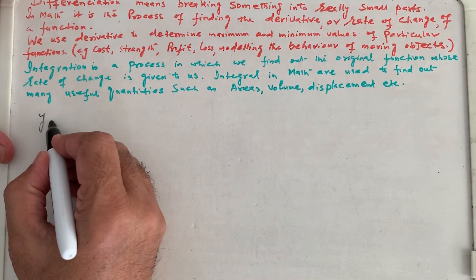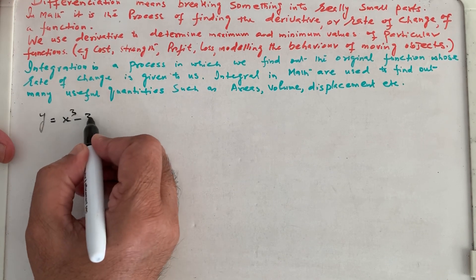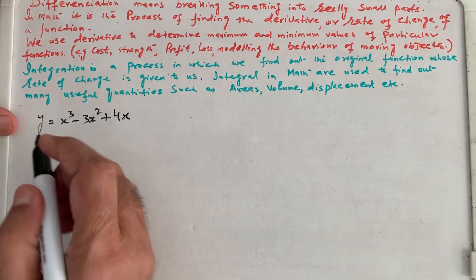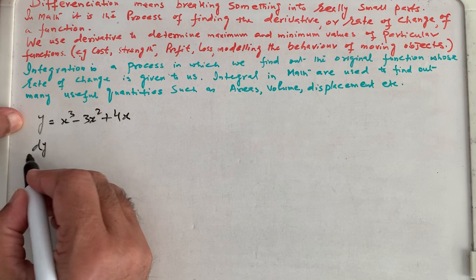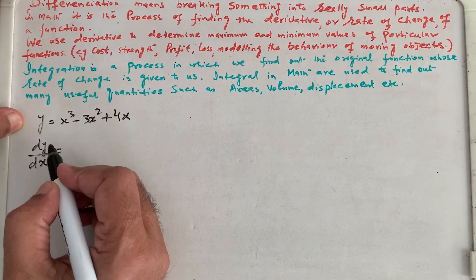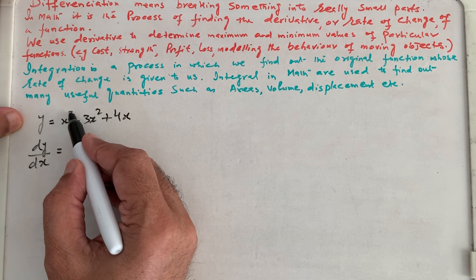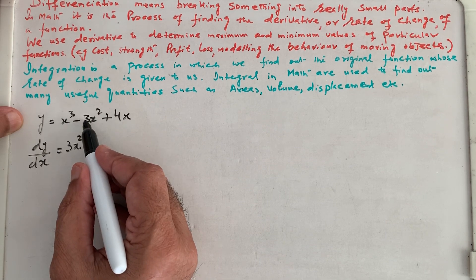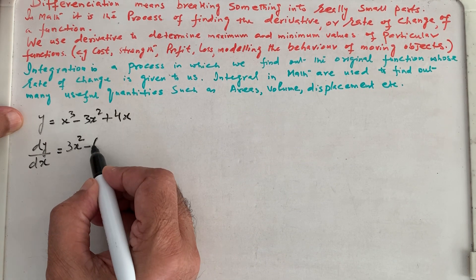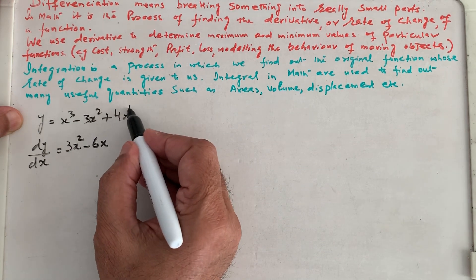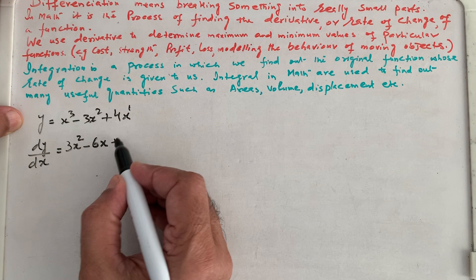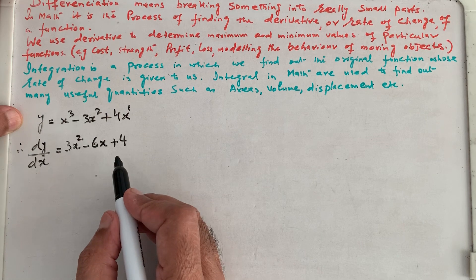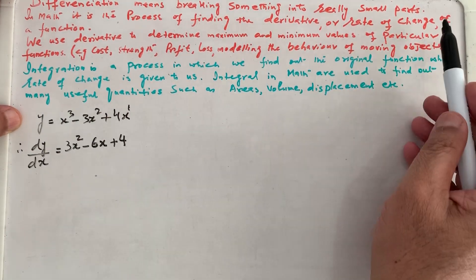For example, if we have a function y which is x cubed minus 3x squared plus 4x, and we want to find the derivative dy/dx, the process is that we bring the coefficient down and reduce one power. So 3 times 2 is 6, reduce one power; and 4 times 1 is 4, reduce one power. So dy/dx gives us the rate of change of the function.